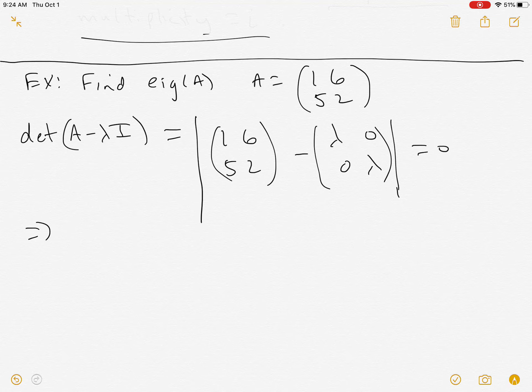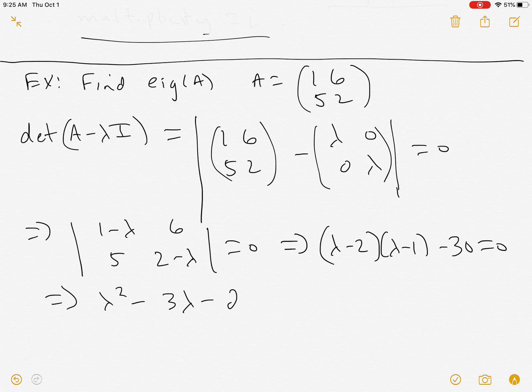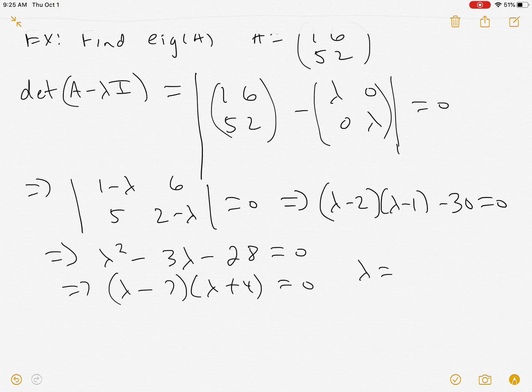So this says now I have the determinant of (1-λ, 6, 5, 2-λ), set that equal to 0. And then we do (λ-2)(λ-1) - 30 = 0. Now you do the determinant, and get this quadratic, and factor it, and give us the eigenvalues -4 and 7.